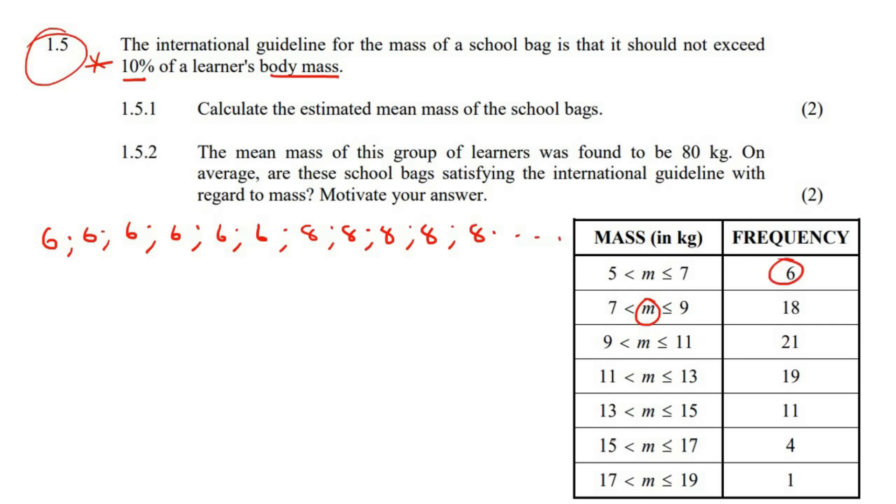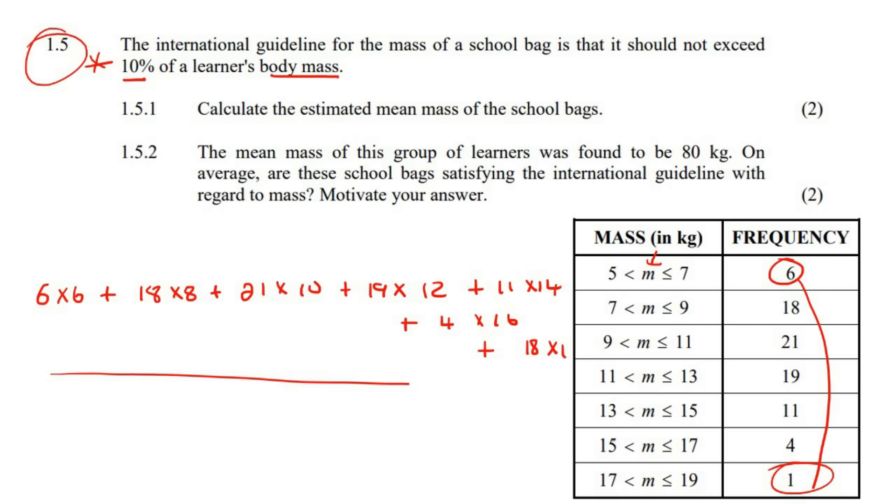So what is a fast way to do that? Well, you can say that there are six learners with a six-kilogram bag. So you can just say six times six plus then there are 18 learners with an eight-kilogram bag. And then there are 21 learners with a 10-kilogram bag and so on and so forth. So 11 times 14 plus four bags that are 16 kilograms plus 18 bags times one. But now, if you did have to go add all of that together, what would you have divided the answer with at the end? How does average work? Well, you would have divided by how many items there are. How many items are there again? Well, we said if you add up all of these, there are 80 learners in total. So you would divide that by 80.